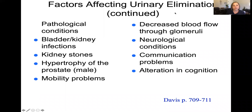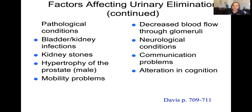Your Davis text also talks about factors that affect urinary elimination. Pathological conditions include neoplasms, cancers, bladder or kidney infections, kidney stones (calculi that build up), and hypertrophy of the prostate — an enlarged prostate that can occlude the urethra. Mobility problems can make it difficult to reach the bathroom. Decreased blood flow to the kidneys reduces urine production. Neurologic conditions can affect the ability to void intentionally. Communication problems and alterations in cognition — someone who is not mentally alert may have difficulty controlling their urine.